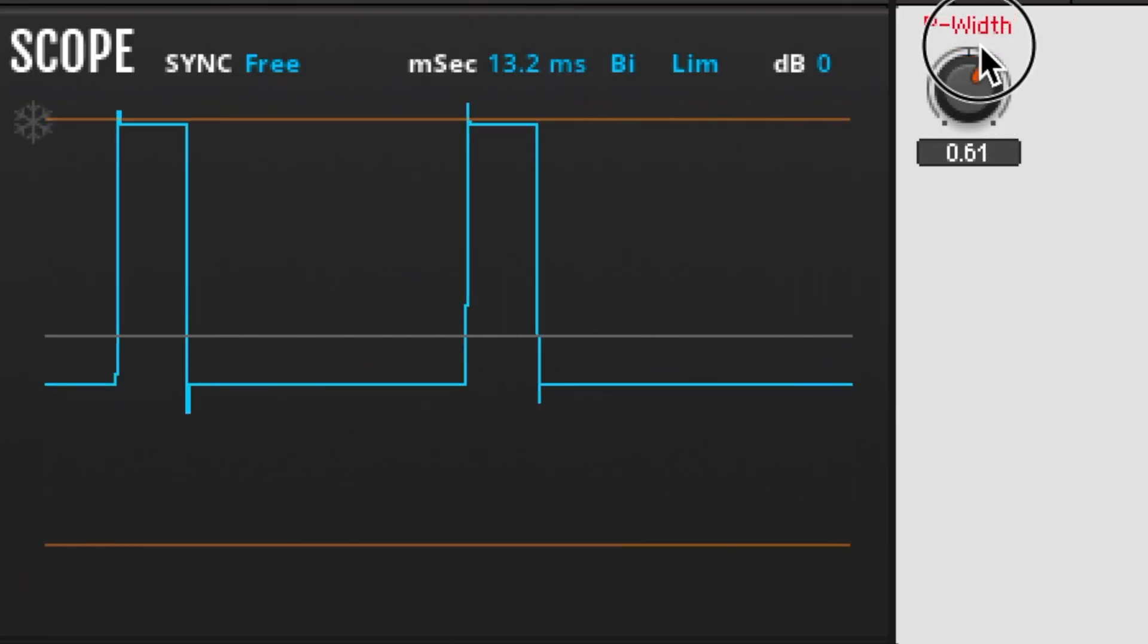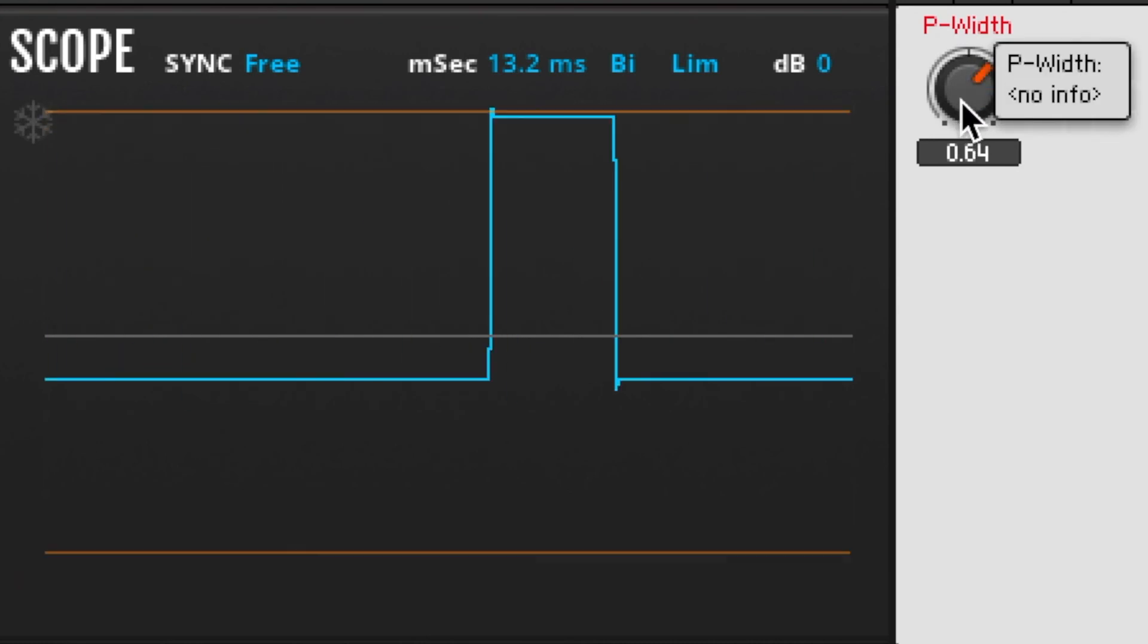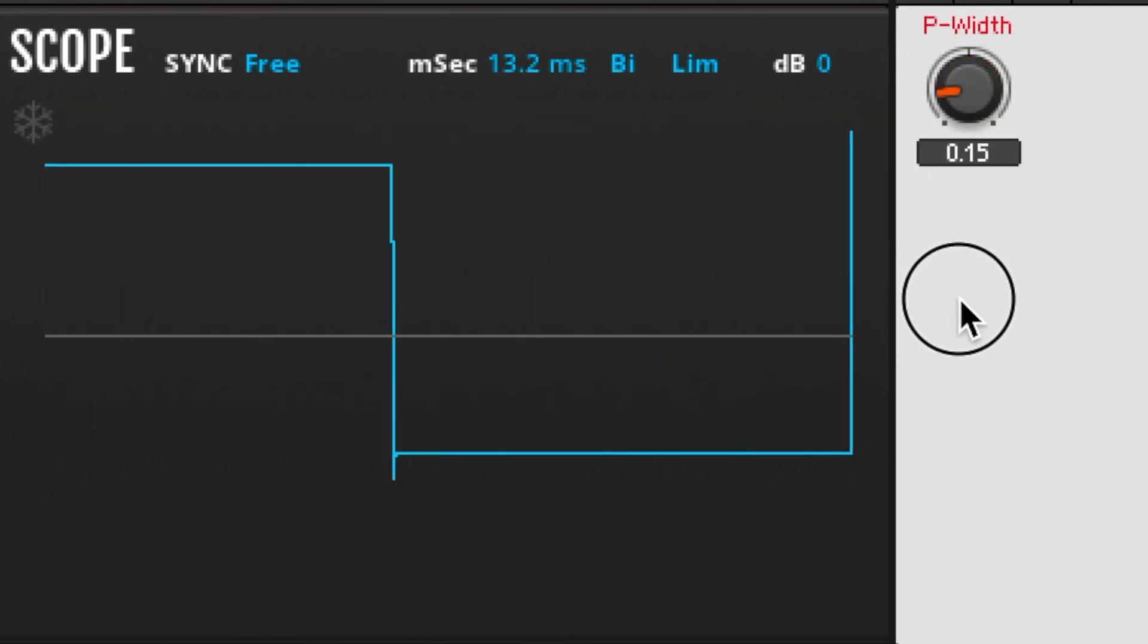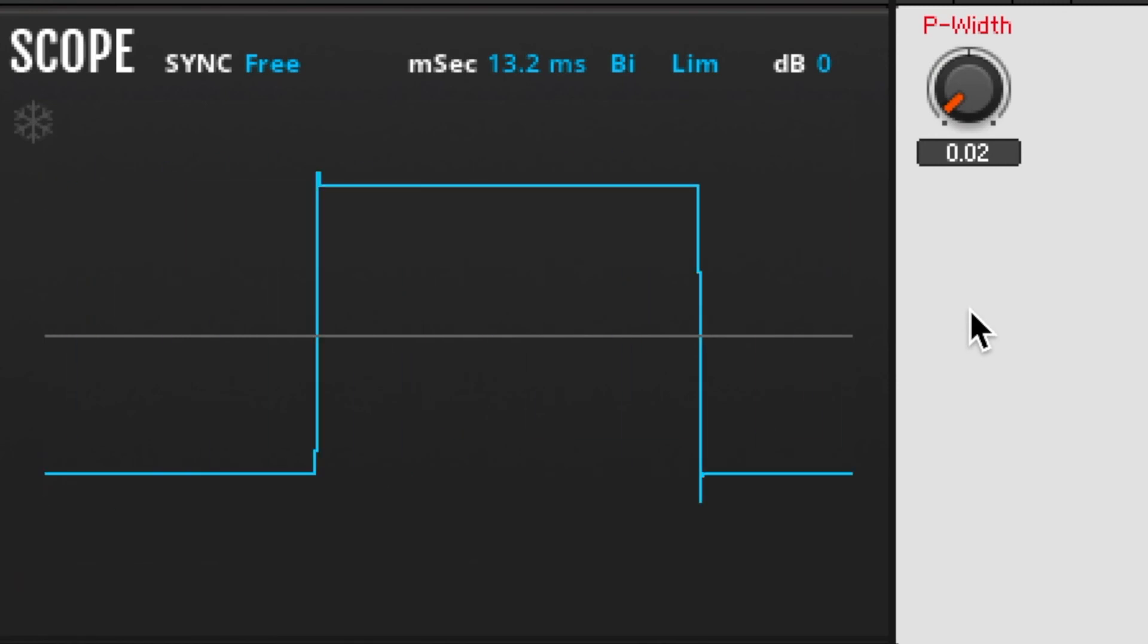The harmonic makeup of a rectangle wave changes as you change its duty cycle. We'll set aside the math of that for the moment, but as that harmonic spectrum changes, so will the timbre.